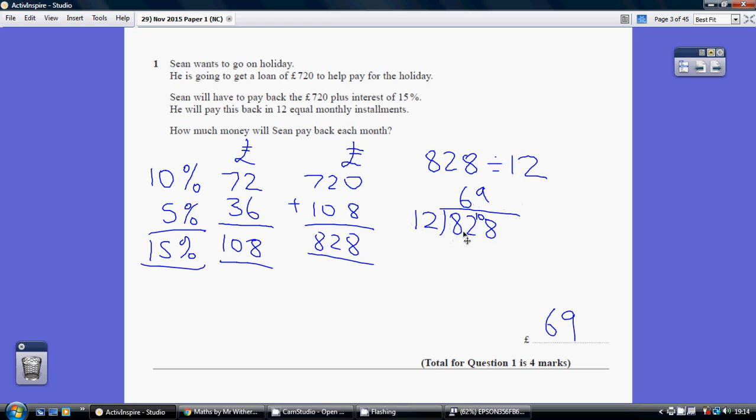12 into 8 doesn't go so we have to look at the 82. 12 sixes are 72. So we've got 6 carry 10 giving us 108 here. 12 nines are 108. So our answer is £69.